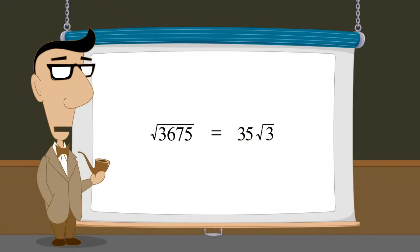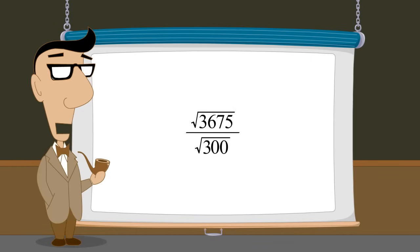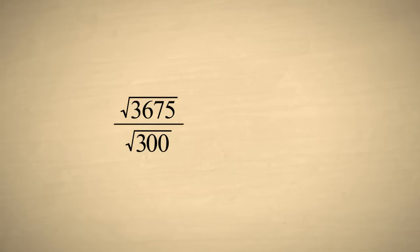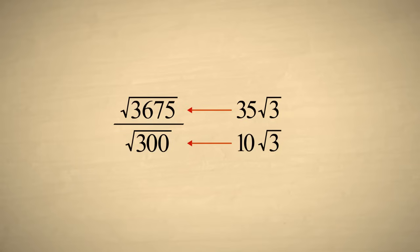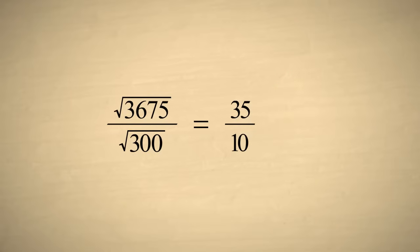35 times the square root of 3 may be easier to work with than the square root of 3675. However, there is another advantage to writing a radical expression in this form. Let's say that we wanted to divide this square root by the square root of 300. The top number is 35 times the square root of 3, and the square root of 300 is 10 times the square root of 3. Rewriting the quotient using these simplified roots, it is easy to see that the numerator and denominator have a common factor — the square root of 3 — which we can eliminate, leaving us with 35 tenths, or 7 halves.